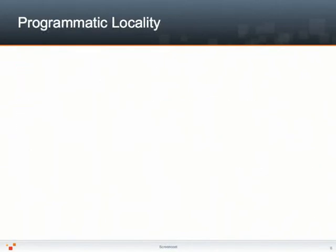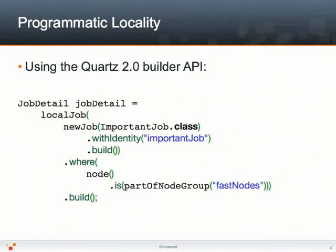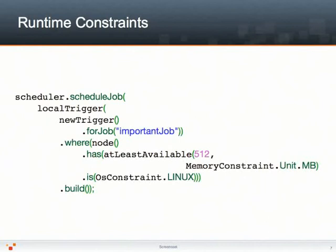Let's now have a look at how to use Quartzware programmatically. In case you have not yet used the Quartz 2.0 builder API, this is how you create a job detail for the important job class with identity important job. newJob is a static method returning a job detail builder. You might have noticed that this job detail is belonging to the default group. To have it dispatched to a particular node, we're going to wrap the job creation into a LocalJob, and using the fluent API, we're going to say that this job needs to be executed on a node which is part of the fast nodes group. Similarly, we're going to register a trigger for that job that needs to be executed on a node that has at least 512 megs of memory available and that is running Linux. These two trigger constraints will come in addition to the one defined on the job, and they will be evaluated at trigger time so that the scheduler can define what is the best node to run the job on.